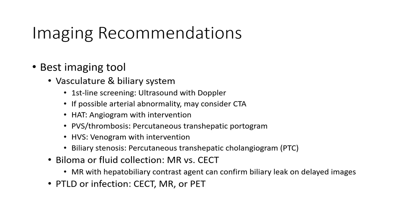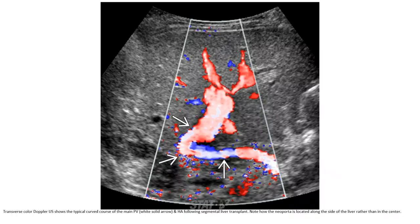For biliary stenosis, percutaneous transhepatic cholangiogram is used. For fluid collections and hematoma, MRI is preferred. MRI with hepatobiliary contrast agent can confirm a biliary leak on delayed images. For PTLD or infection, contrast-enhanced CT or MRI with hepatobiliary contrast is recommended.